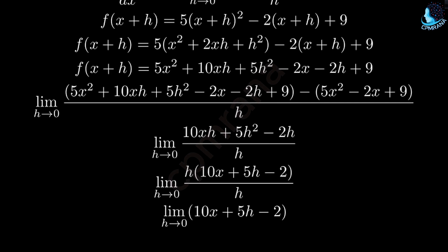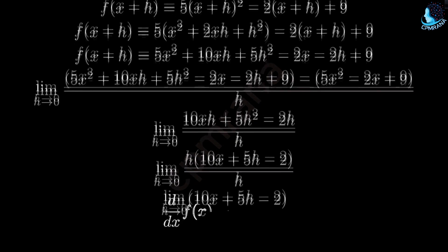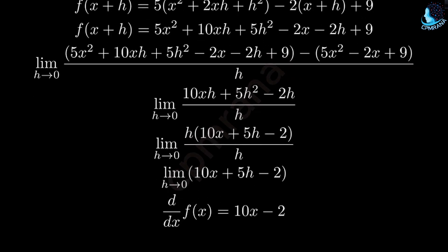Finally, as h approaches 0, the term 5h goes to 0, leaving us with 10x minus 2. This is our derivative. f prime of x equals 10x minus 2.